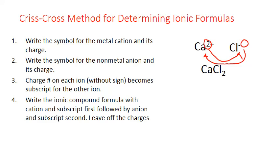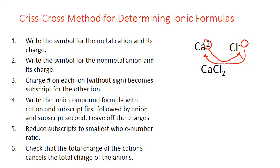There are two additional steps. First, always double-check that the subscripts really are in their lowest whole number ratio, and reduce them if they aren't. For calcium chloride it's a 1-to-2 ratio, which can't be reduced further. Step six is to check that the total charge of the cations equals the total charge of the anions. We have one calcium ion with a +2 charge, and two chloride ions each with a −1 charge, giving +2 and −2, which balance each other out.